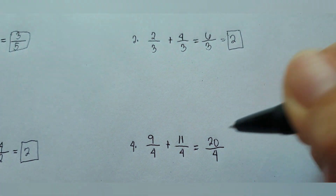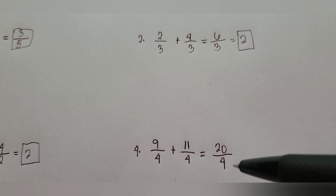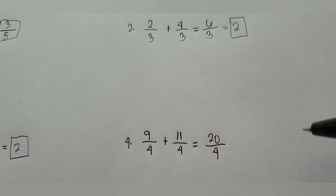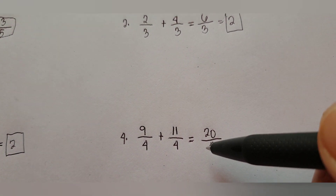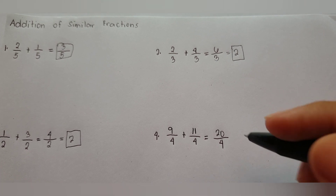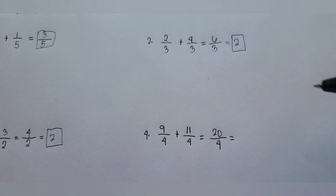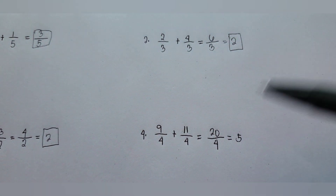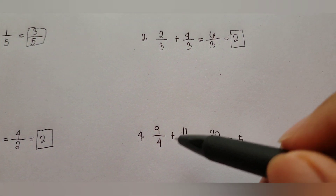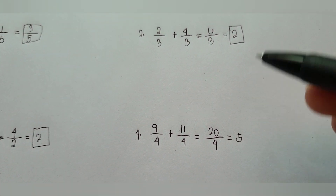Then add the numerators: nine plus eleven equals twenty. Before finalizing the answer, check if twenty over four can be reduced to lowest terms. Since twenty is divisible by four, twenty divided by four equals five. Since five can no longer be simplified, the final answer is nine over four plus eleven over four equals twenty over four, or five.